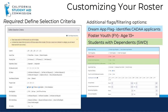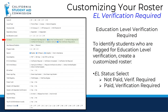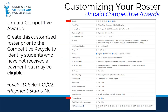We will show you how to customize two popular rosters: one that displays all students whose EL verification is required, and the other which shows how to identify unpaid competitive awards for use prior to the competitive recycle. To create an EL verification roster, we will select both verification required boxes — the not paid verification required as well as the paid verification required next to EL status.